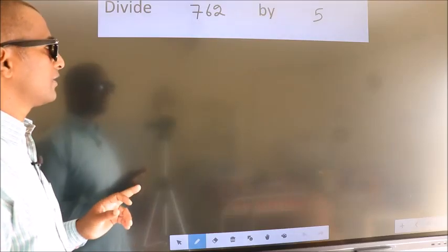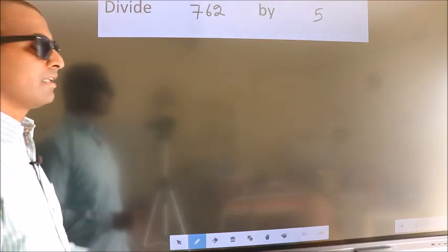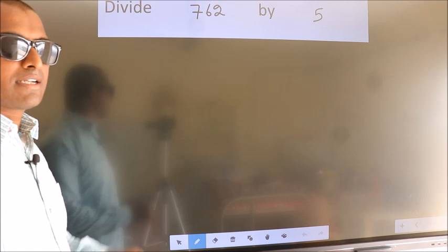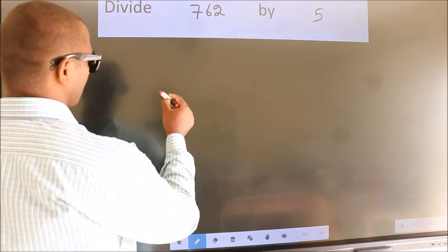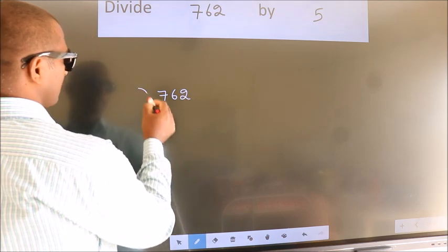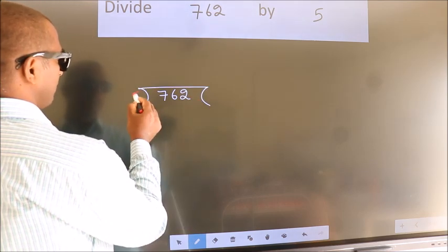Divide 762 by 5. To do this division, we should frame it in this way. 762 here, 5 here.